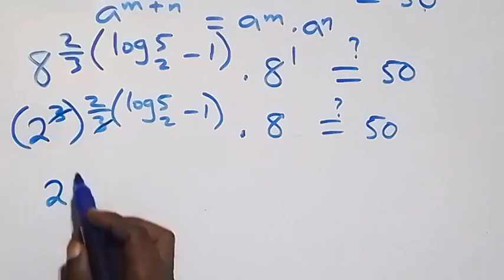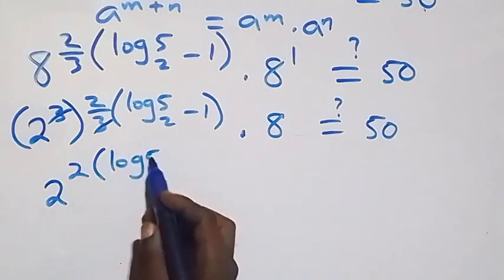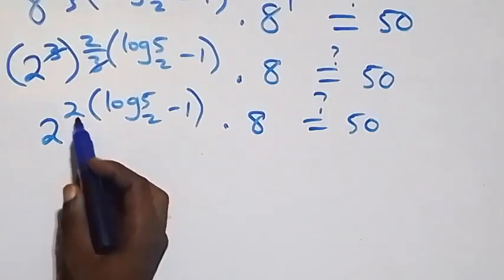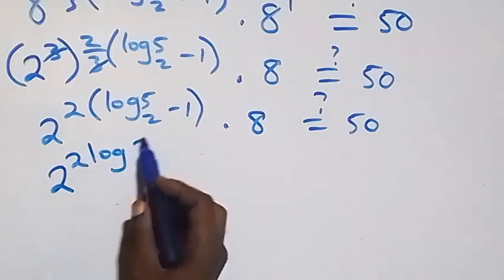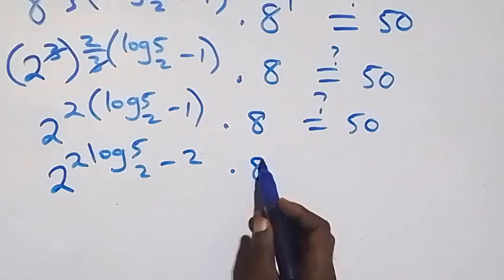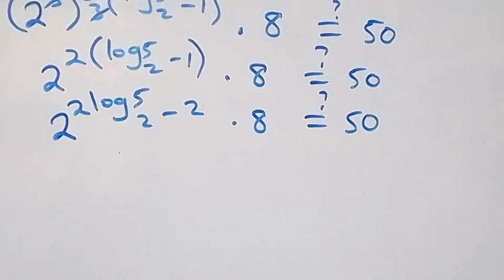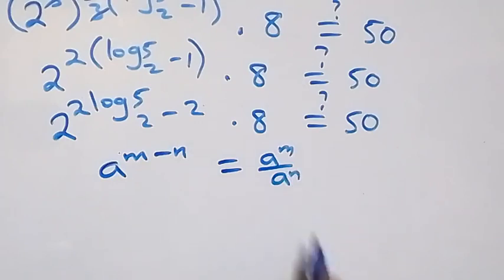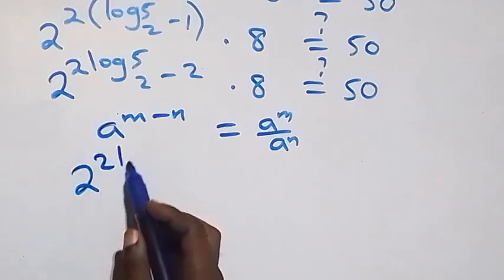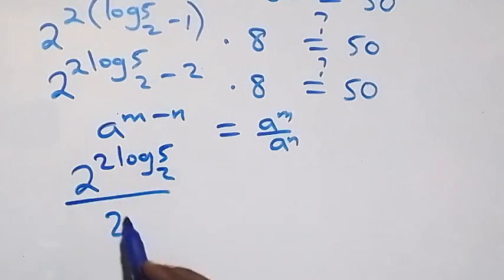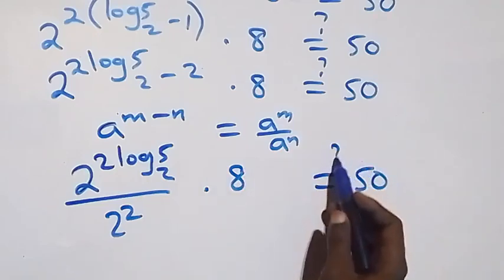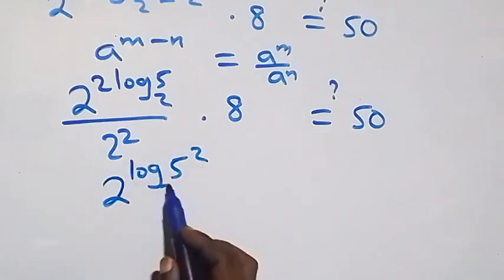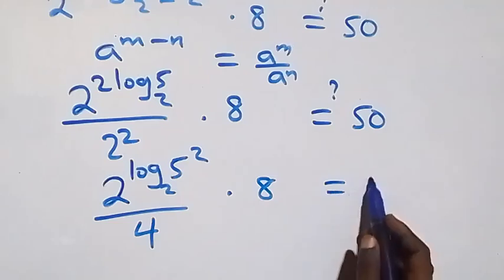Since 8 equals 2³, the power 3 and the factor of 1/3 cancel, leaving 2 raised to power 2(log₂5 − 1) times 8 equals 50. Expanding the bracket gives 2 raised to power 2·log₂5 minus 2, times 8 equals 50. Applying the index subtraction law, this becomes 2 raised to power 2·log₂5, over 2 squared, times 8 equals 50.